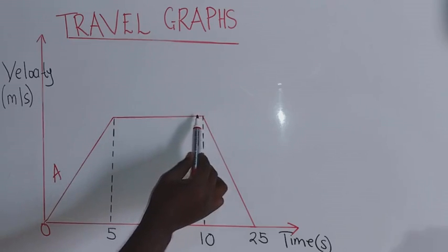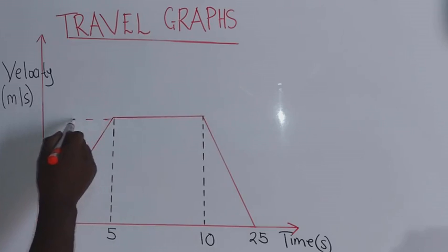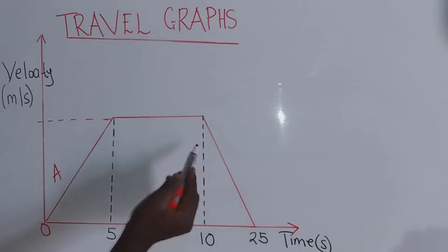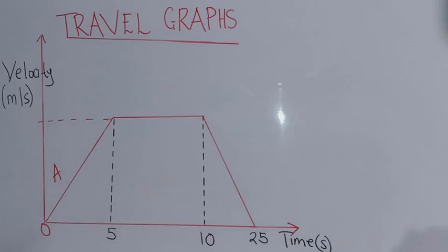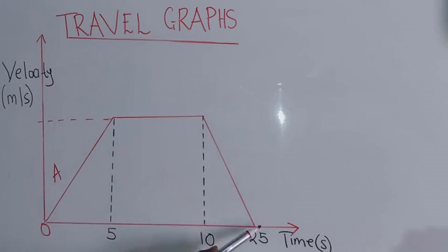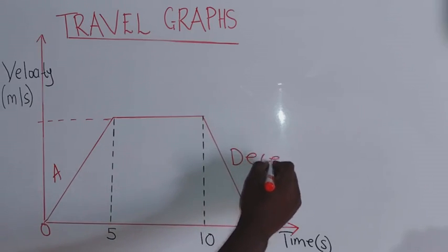From here to here we are going to have constant speed, which reflects a horizontal line on the graph. Then from here to here we have the object slowing down, meaning it is decelerating or retarding. A negative acceleration means you have deceleration.